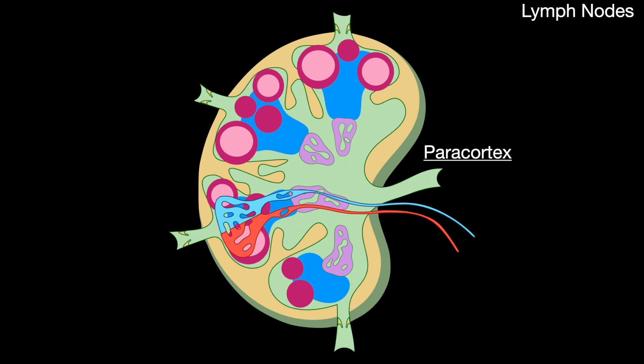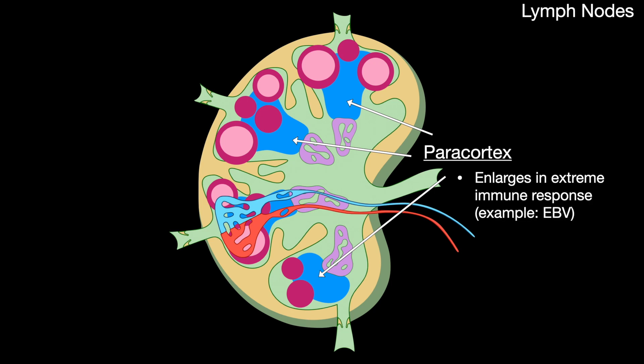The pericortex contains T cells. The pericortex enlarges during an extreme immune response, for example with the Epstein-Barr virus. In DiGeorge syndrome, it is underdeveloped.